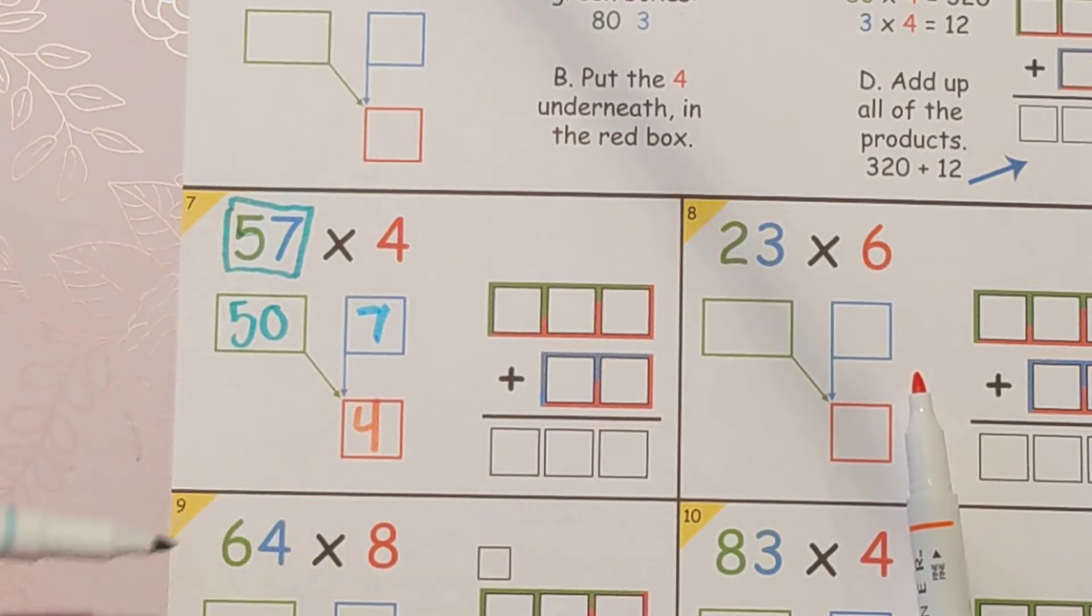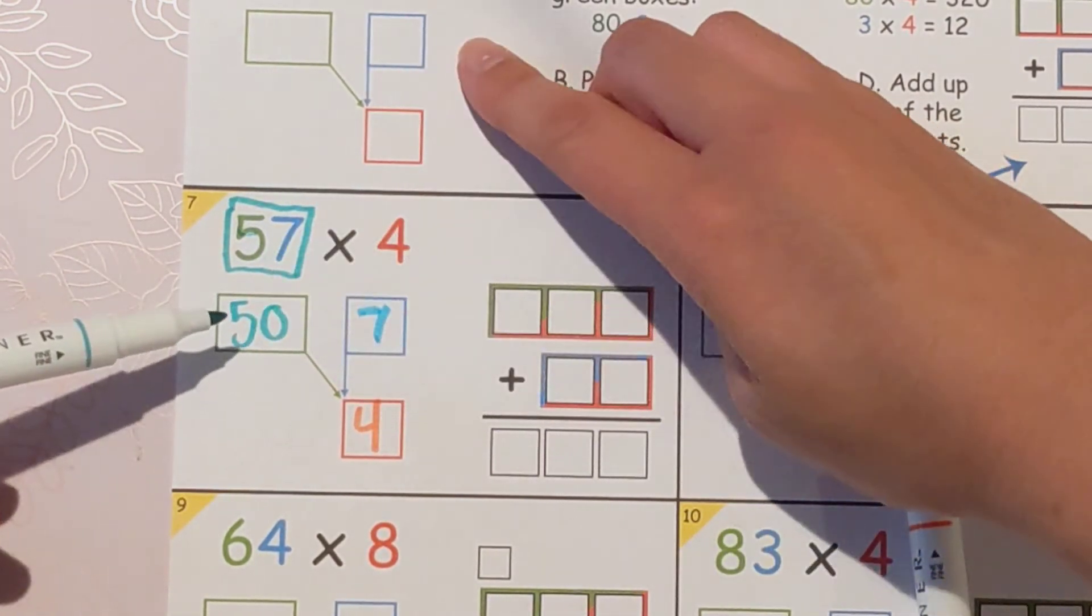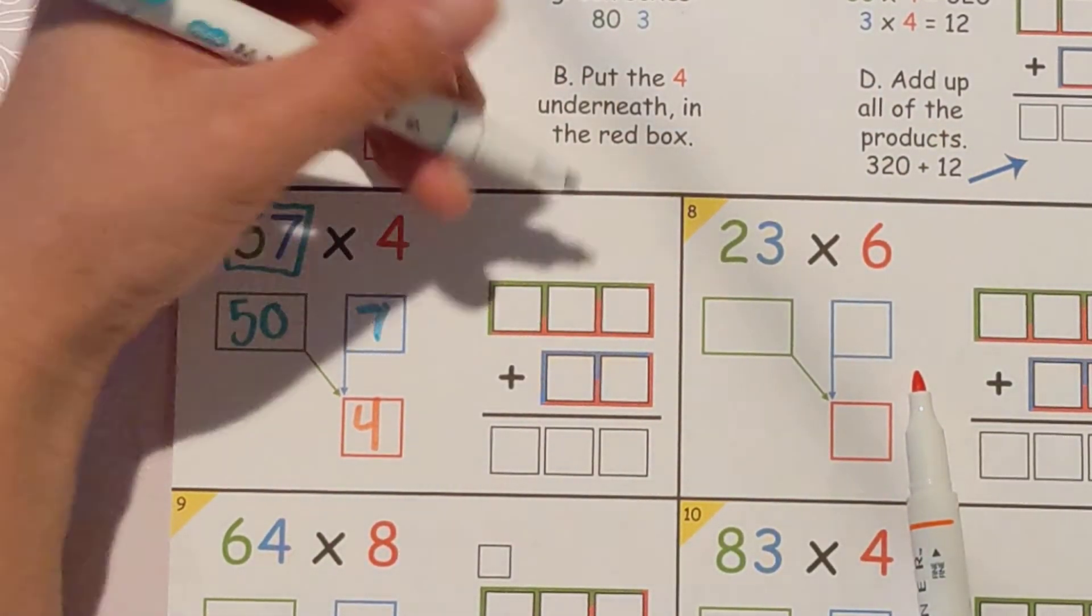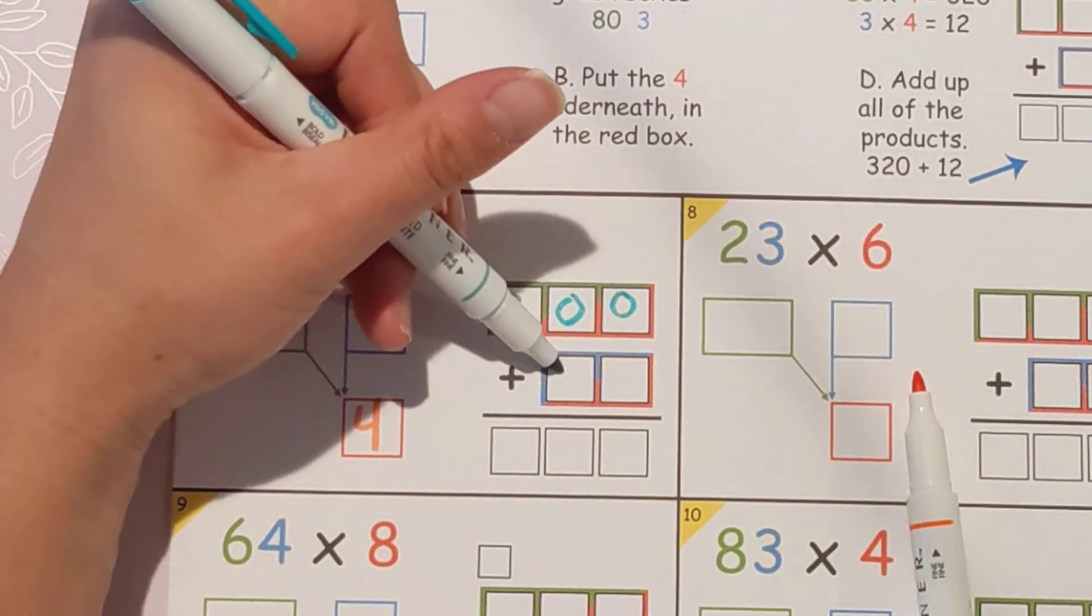For 50 times 4 just ignore that zero and do 5 times 4 and then put the zero back on. 5 times 4 is 20 and then we put that zero back on. 7 times 4 is 28.